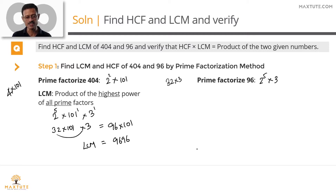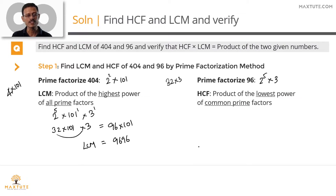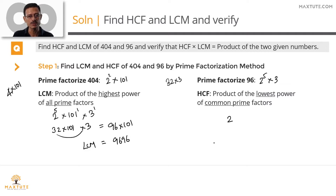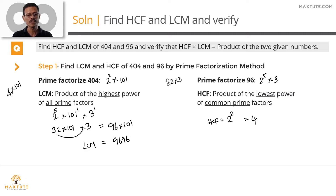Now let's find the HCF. HCF is the product of the lowest power of common primes. The only prime common to both numbers is 2. The lowest power of 2 between the two numbers is 2. So HCF = 2² = 4. Let's quickly recap Step 1 in printed form.